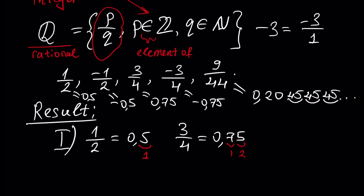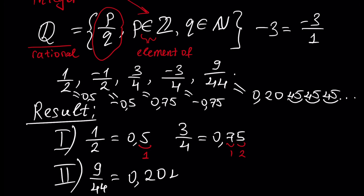The second case is that a rational number can have an infinite number of digits in its decimal representation, like 9/44, which is 0.2045 45 45 and so on — where 45 is a period. So it has an infinite number of digits in its decimal representation, but it has a period. These two cases are the only cases for rational numbers: either a finite number of digits, or infinite but with a period.